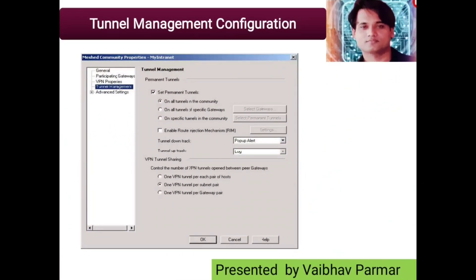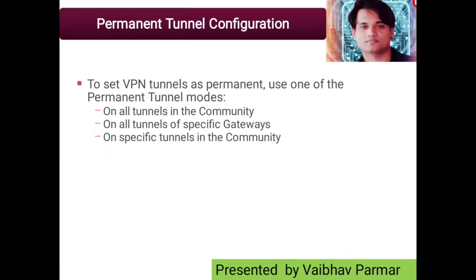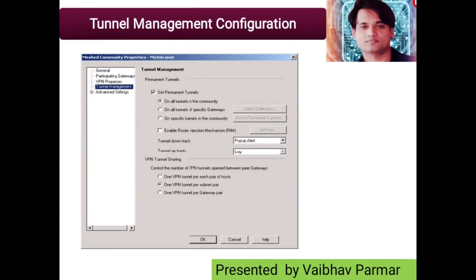To find these options, go to your VPN community and navigate to the Tunnel Management option. You will see two options there: one is Set Permanent Tunnel, and another is the VPN Tunnel Sharing option. To set VPN tunnels as permanent, select Set Permanent Tunnel as shown on the screen. The following permanent tunnel modes are then made available, as you can see on the screen.